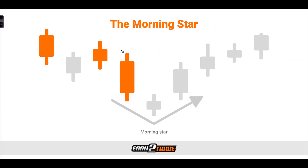Now we're going to look at candlestick patterns when they start forming specific shapes that have been recognized to potentially provide an expected outcome thereafter. The first ones we'll go through will be bullish, then we'll work into some bearish candlestick patterns. When I say bullish, I'm expecting an upward outcome after the pattern. If I say bearish, I'm expecting a downward outcome after the pattern.